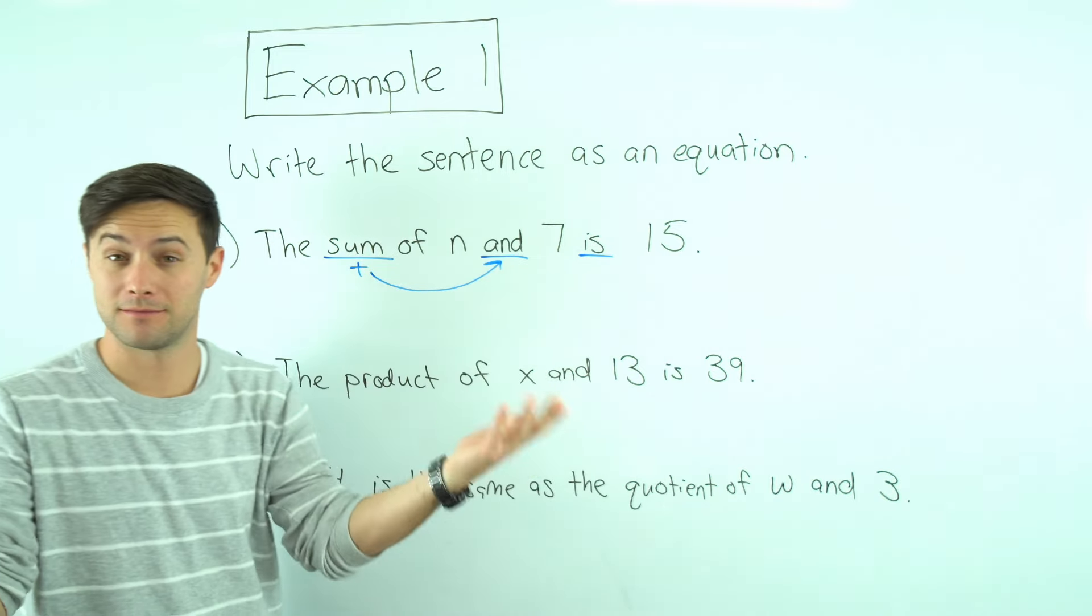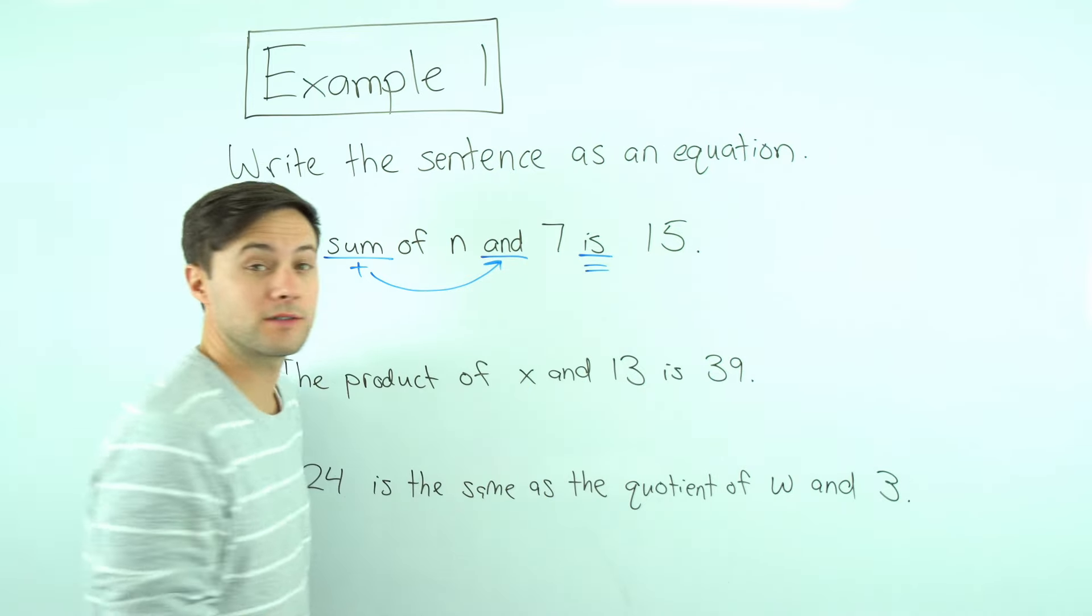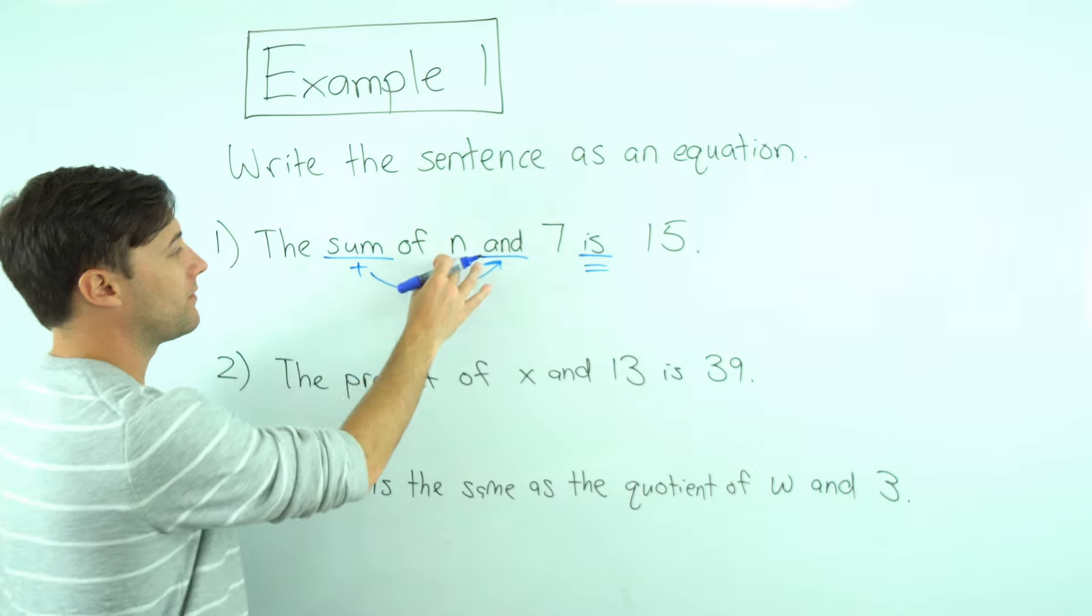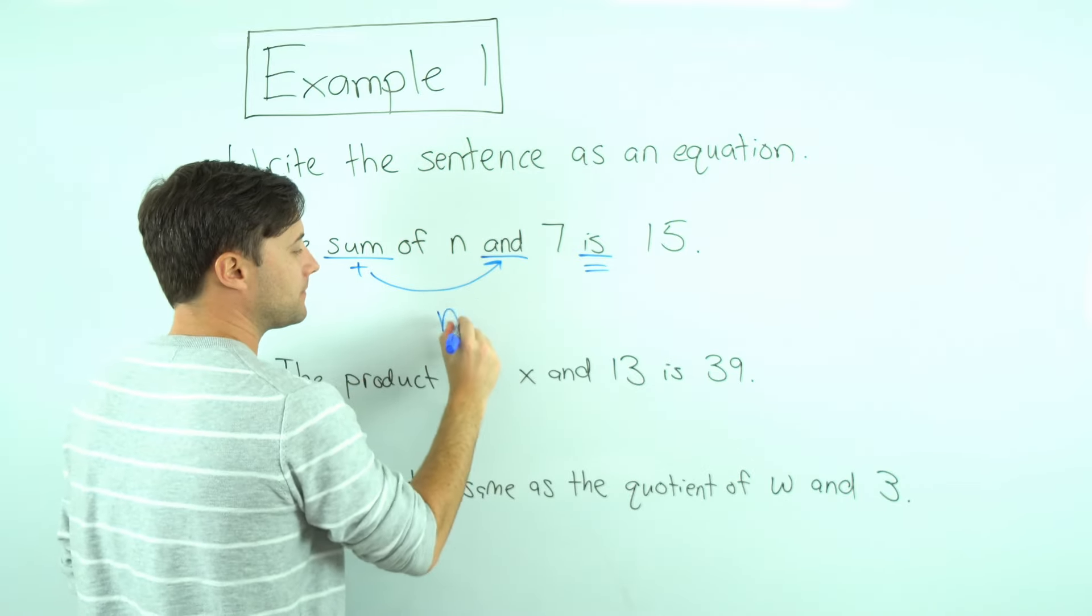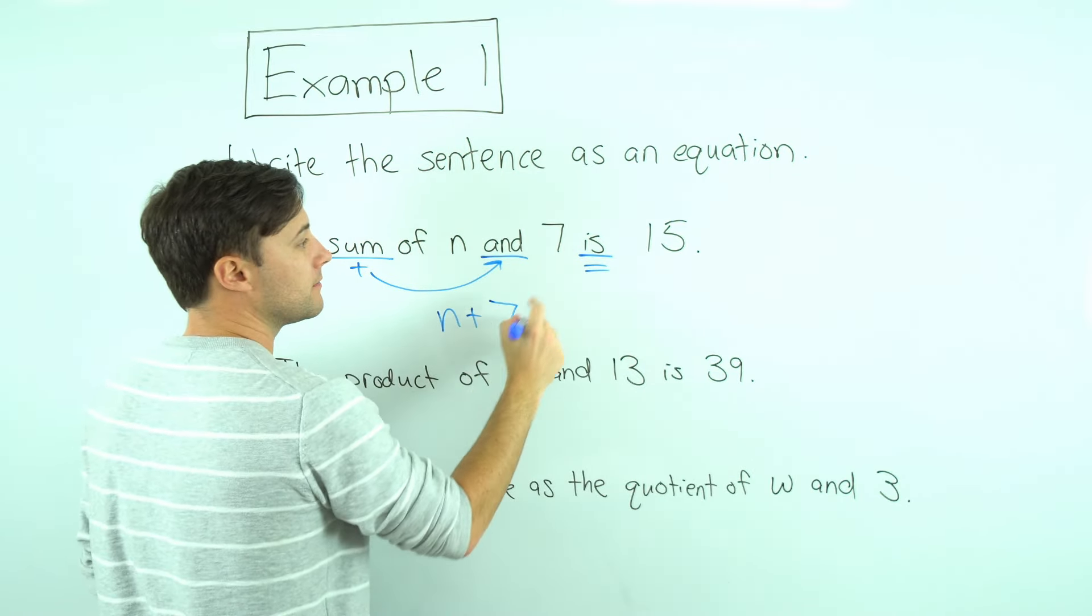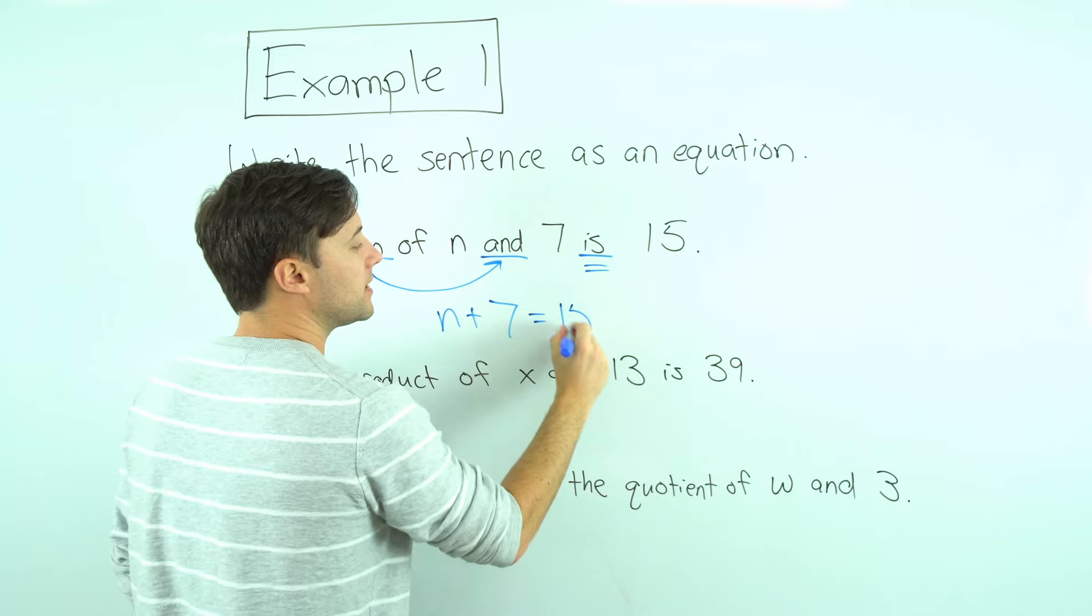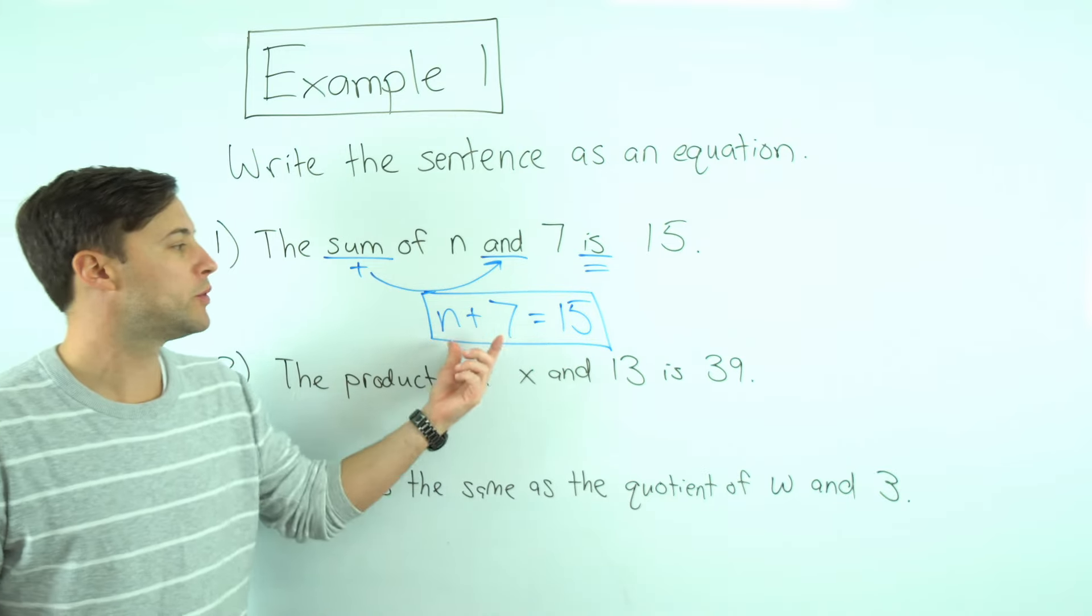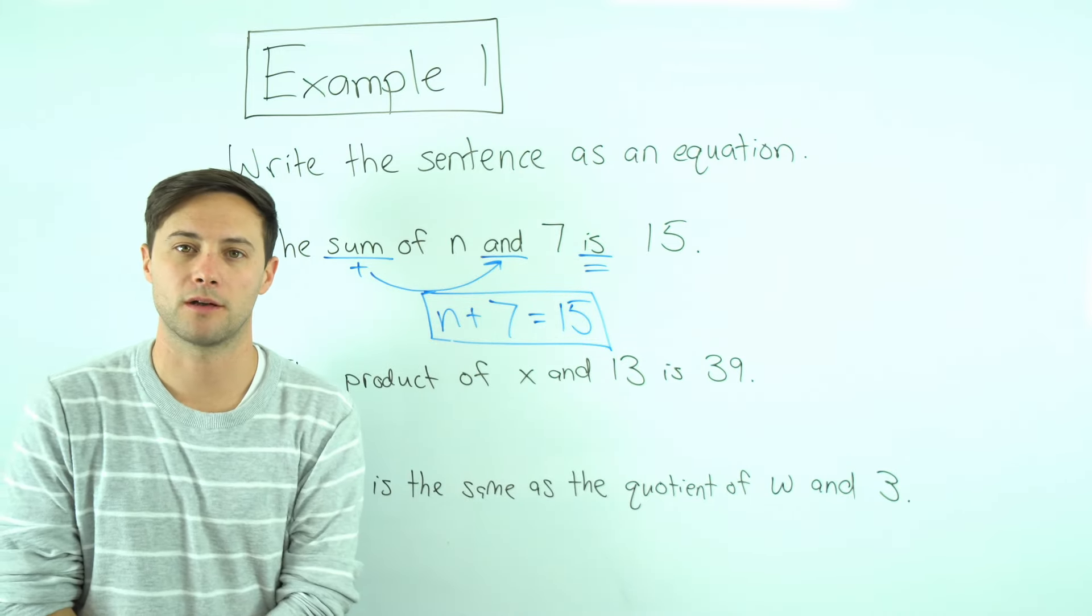Finally, is means equals. So let's put it all together and write our equation. We've got n plus seven equals fifteen. There is our equation. We've got two expressions that are equal to each other.